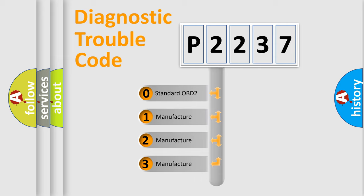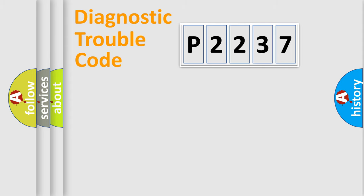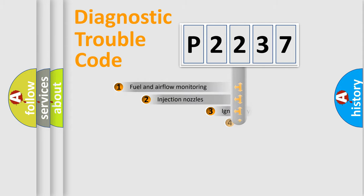If the second character is expressed as zero, it is a standardized error. In the case of numbers 1, 2, or 3, it is a manufacturer-specific expression of the car-specific error.